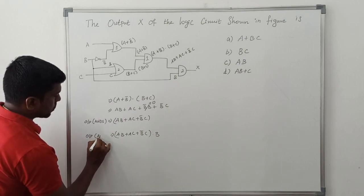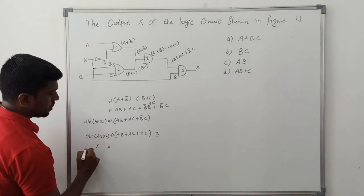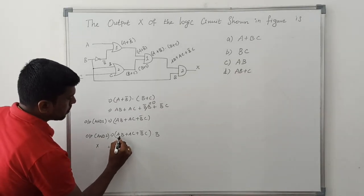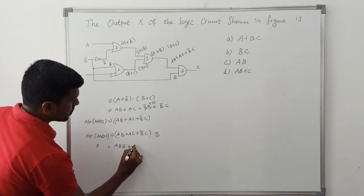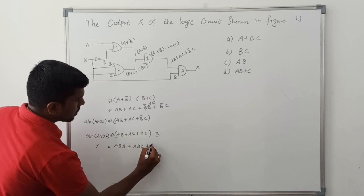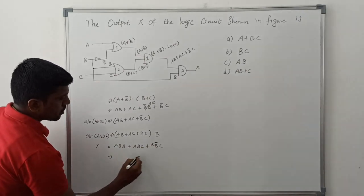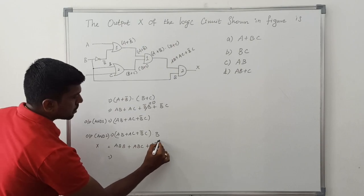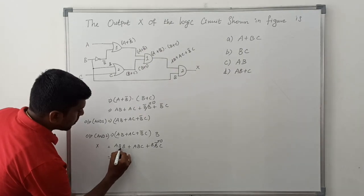So output of AND gate 2 is equal to X. Just multiply this term: ABB plus ABC plus BB bar C. Here B dot B bar C, this value goes to 0.